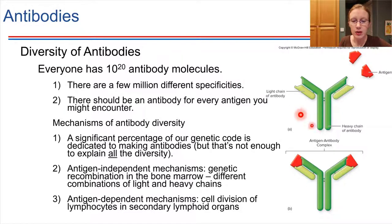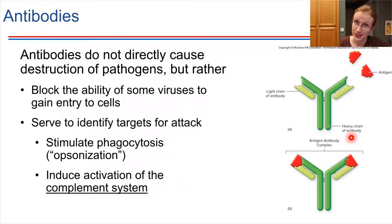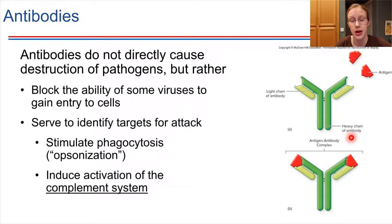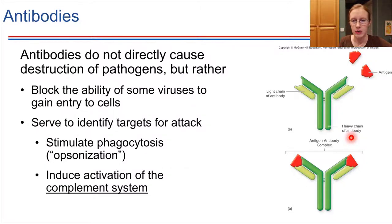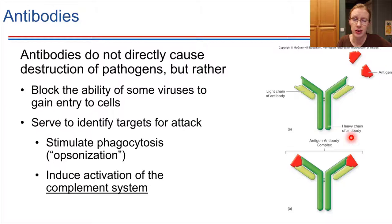Antibodies bind to pathogens, but does that kill the pathogen? No — that's the simple answer. Antibodies do not directly cause destruction of pathogens. Instead, they act like little flags — they tag things so that other immune cells can come over and deal with the pathogen. They act like markers, sticking to the pathogen and providing something our cells can recognize. Also, in the case of viruses, binding of antibodies to virus particles helps to block the virus's ability to enter a target cell. It acts like a sticky coating, and the virus is trapped in that coating and cannot cause an infection.